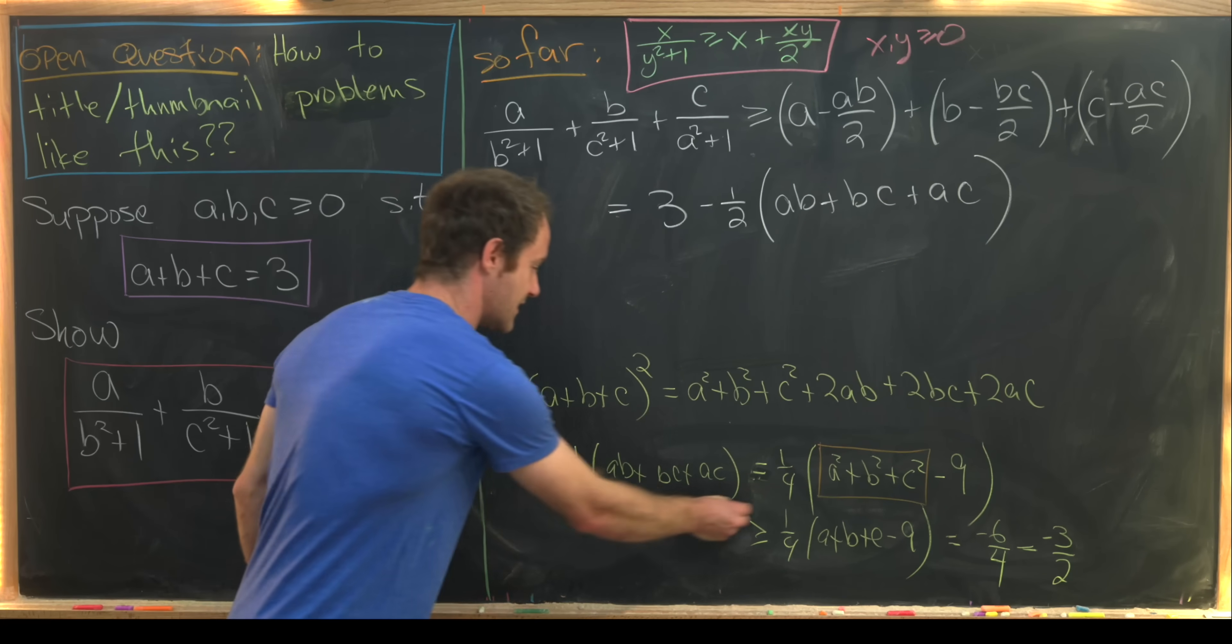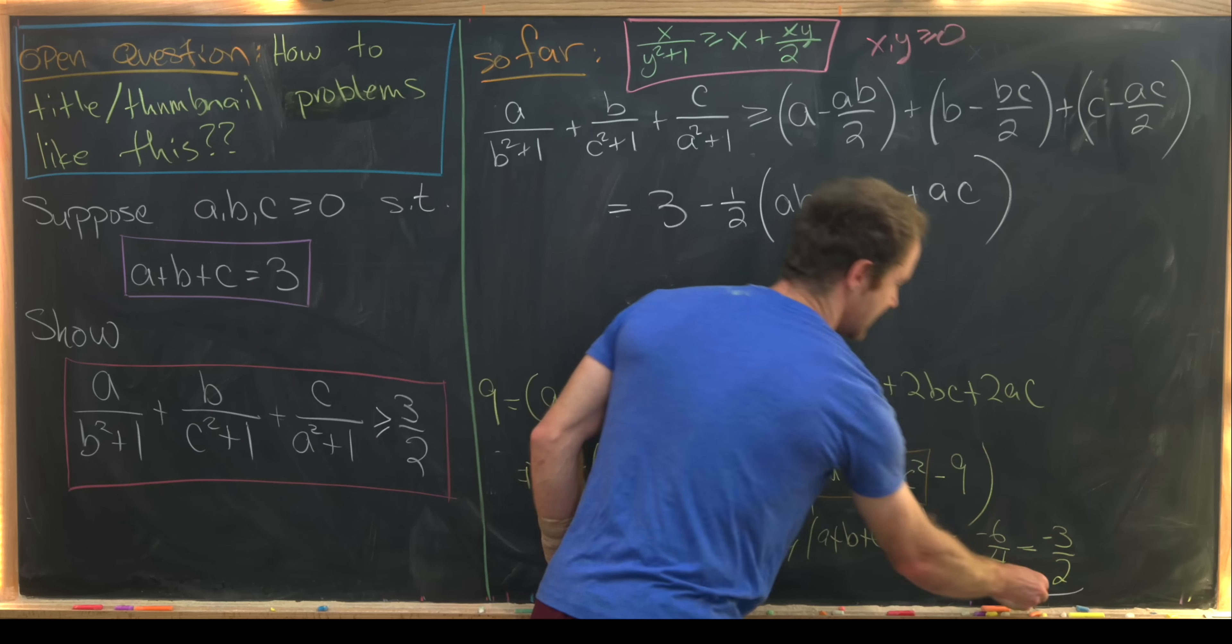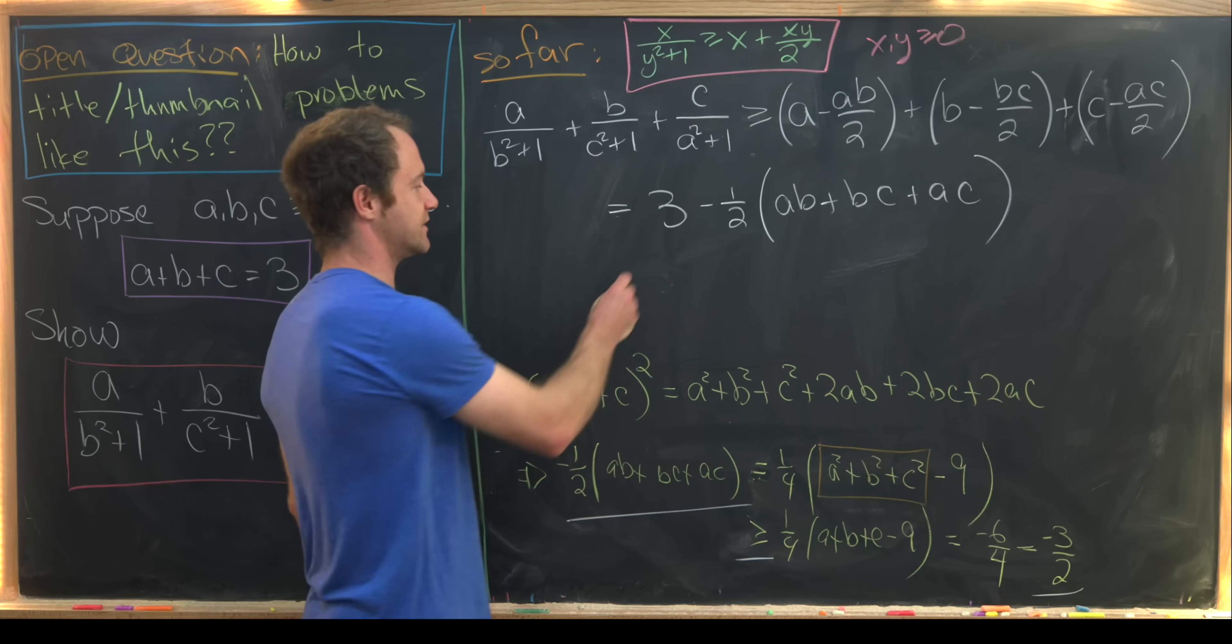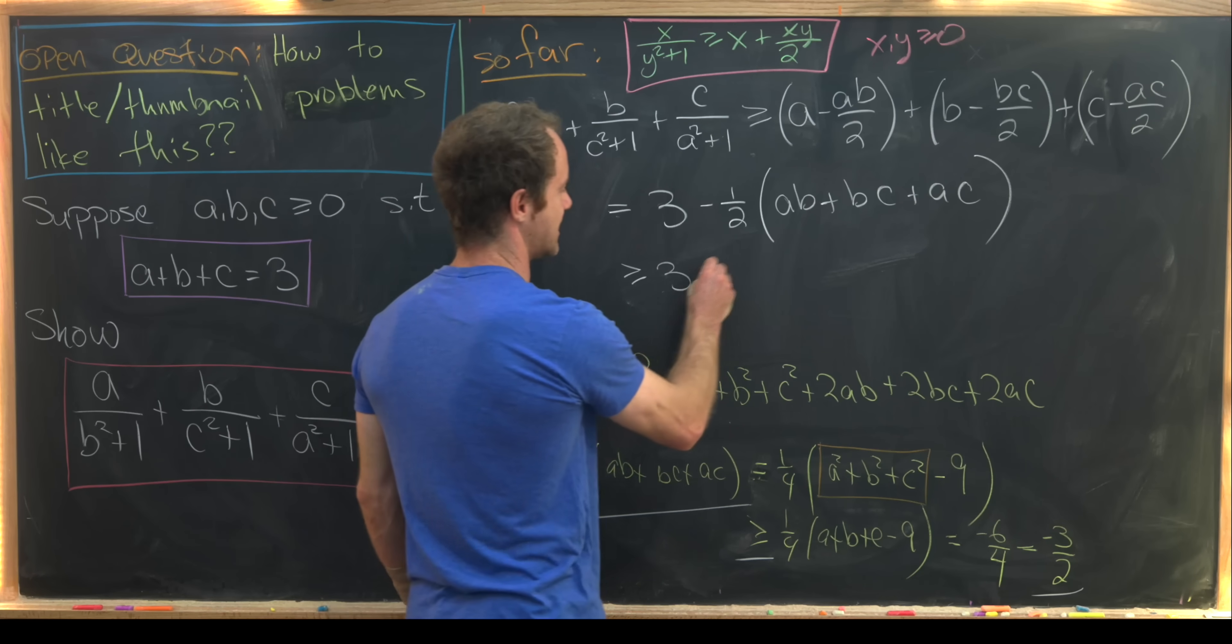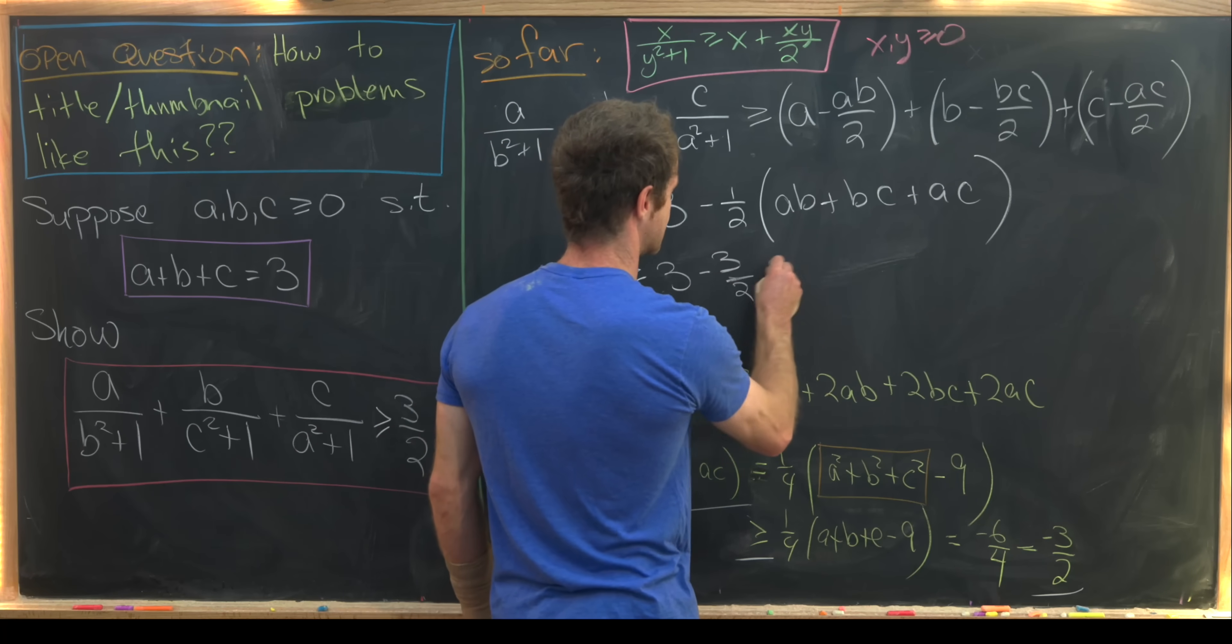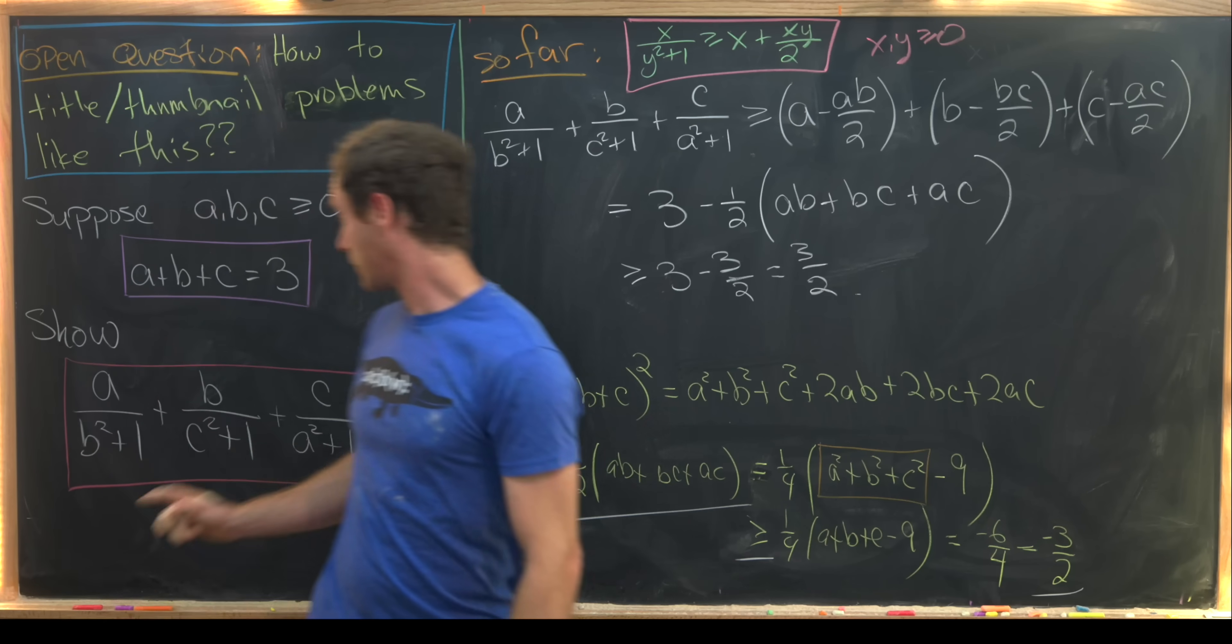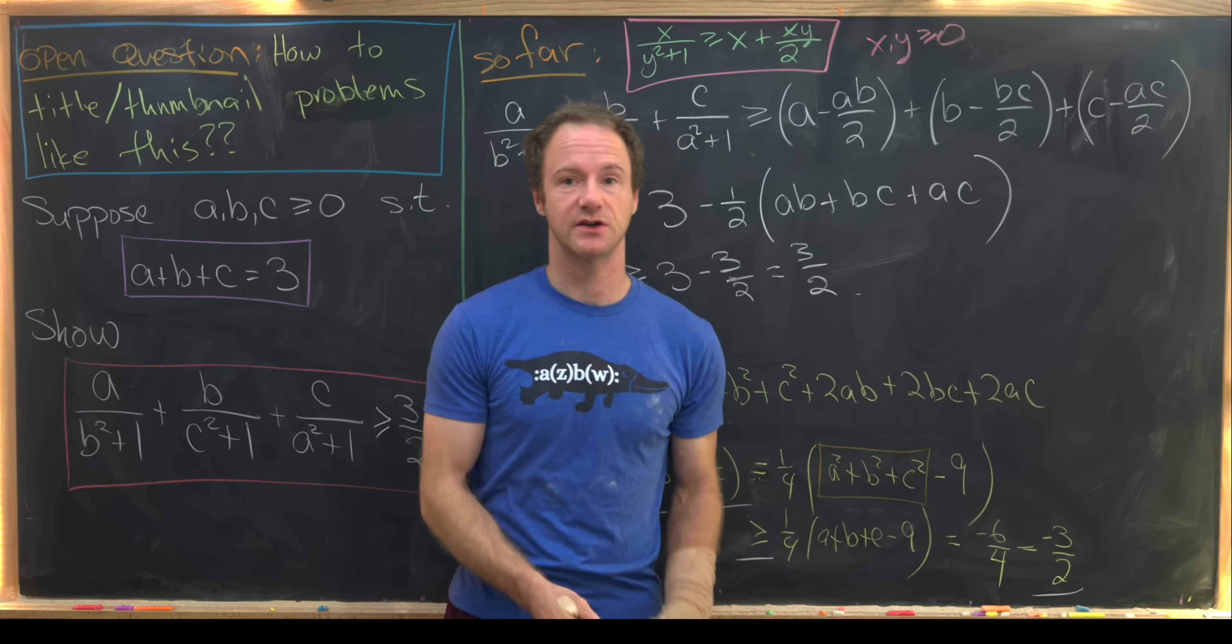So that means we can make this replacement and the inequality is going in the correct order. So notice that this is bigger than or equal to 3 minus 3 halves, which is equal to 3 halves. And that's exactly where we wanted to end up, and that's a good place to stop.